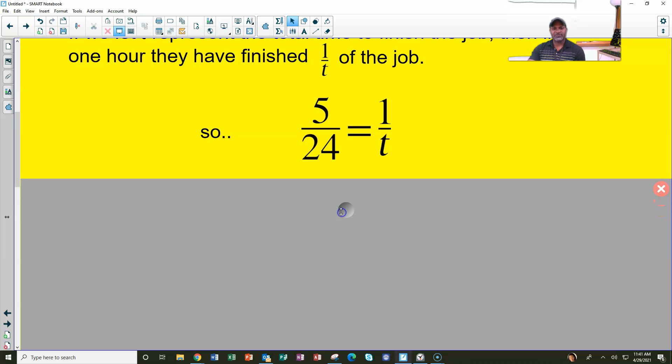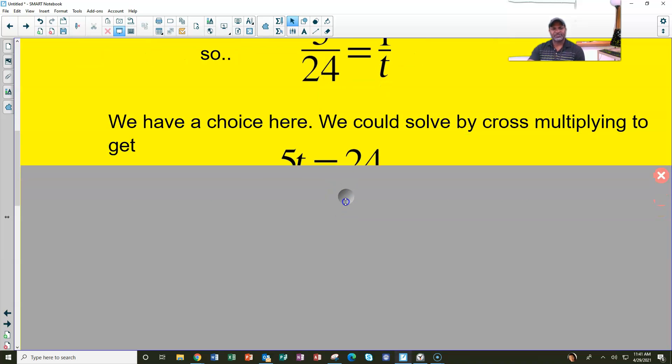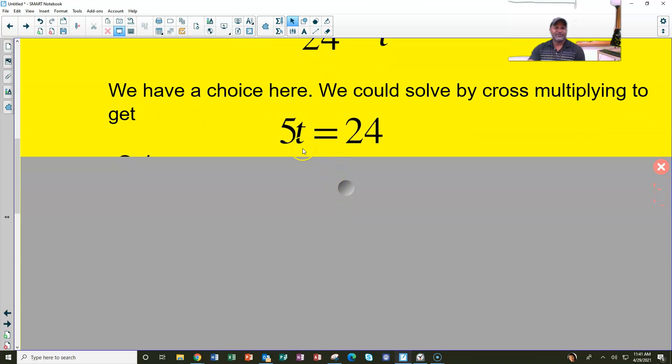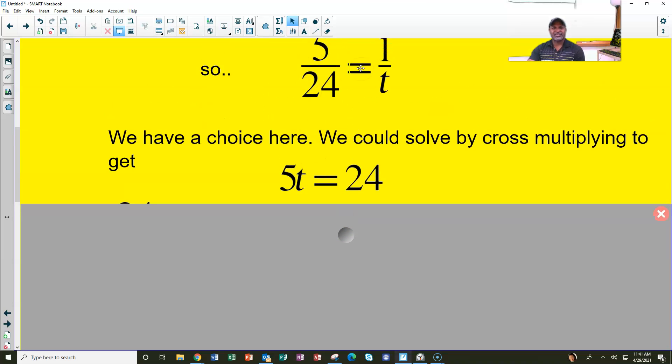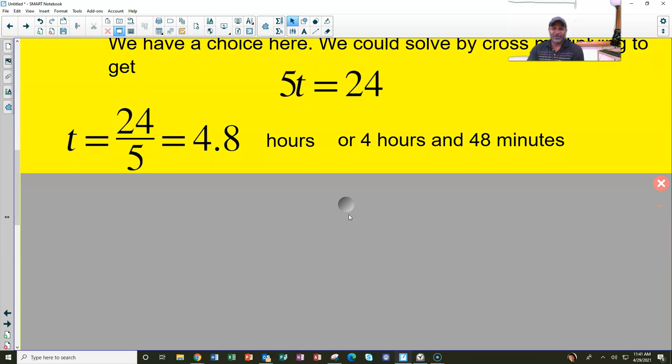So here's the choice. We got two ways to solve this equation. Since it's a proportion, we can solve it by cross multiplying, get five times T, our means and extremes, one times 24, 24, then divide 24 by five and we get 4.8, which is hours, which is four hours and 48 minutes.